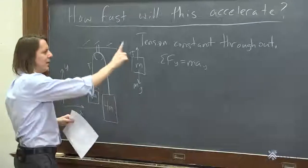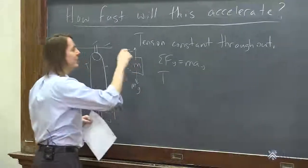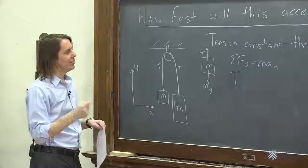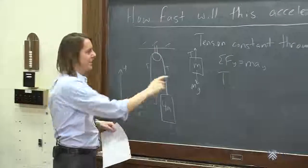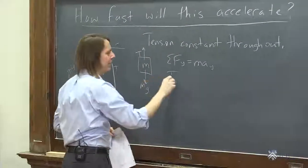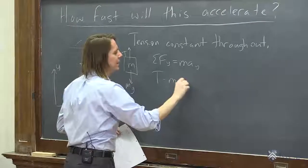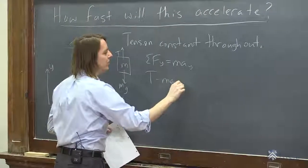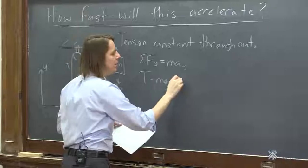So the forces in the y, we have tension T up, because the string doesn't have tension, but it applies a tension force to an object. And so here it's up. And then minus Mg down, and that equals the mass M A.